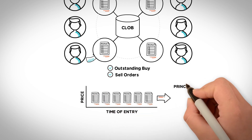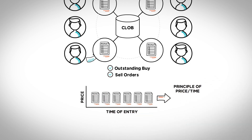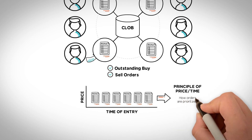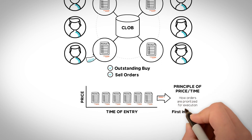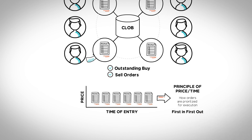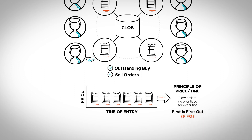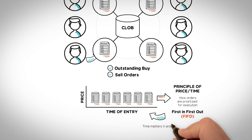The principle of price-time priority refers to how orders are prioritized for execution. Typically, orders are matched on a first-in-first-out basis, or FIFO, meaning that time matters when placing an order with the same price as another order.